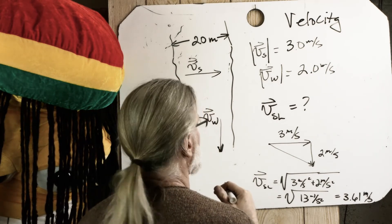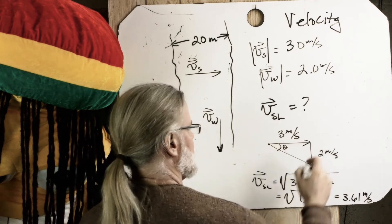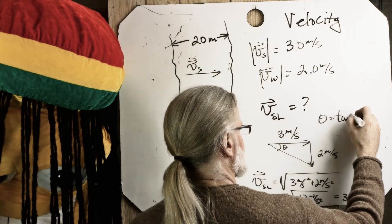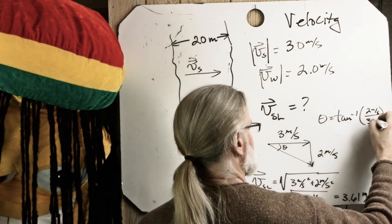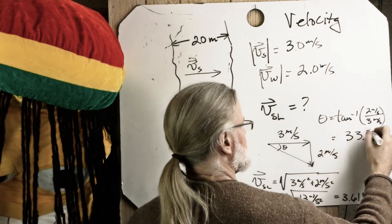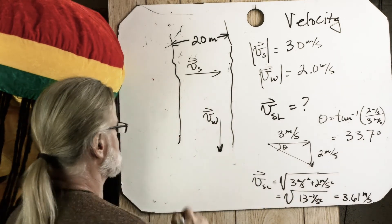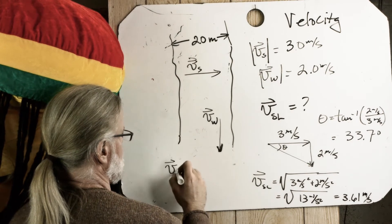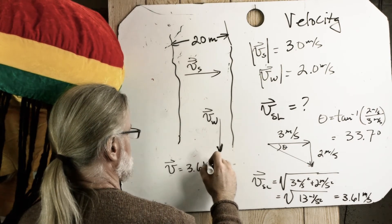Let's find the angle. The angle equals theta equals the inverse tangent of two meters per second divided by three meters per second. Thirty-three point seven degrees.